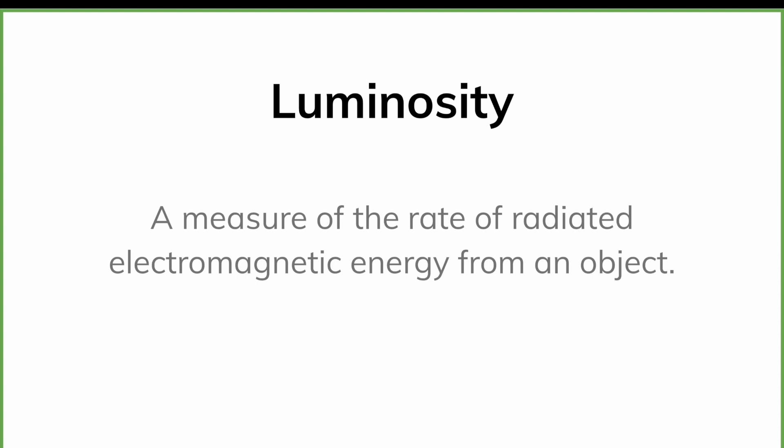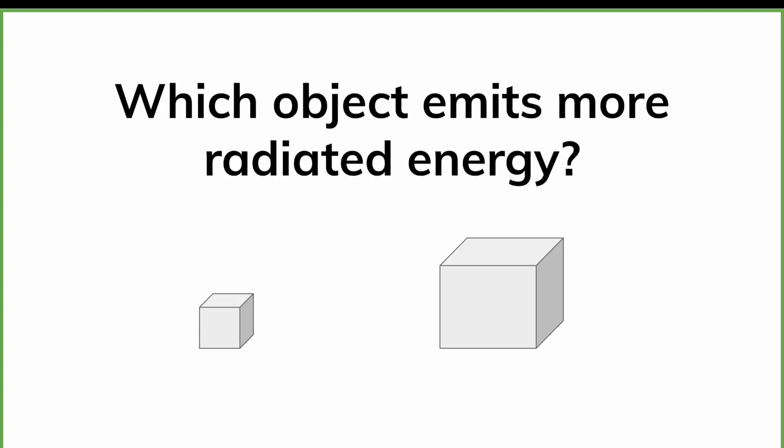All objects emit some sort of radiated electromagnetic energy, and luminosity is a measure of the rate at which radiated energy comes from an object. If we have two objects with different surface areas, we can assume that the larger object will emit more radiated energy per second. However, if the objects have the same surface area but one is at a higher temperature, the object at higher temperature will emit more radiation. So we know that the rate of emitted radiation is related to the surface area of the object as well as the temperature of the object.